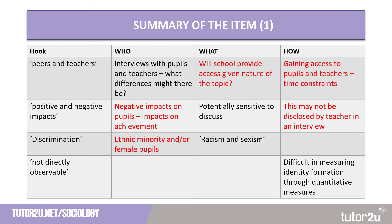For the discrimination hook, we may want to focus on characteristics of ethnic minority or female pupils, and consider status differences with a researcher. For instance, would a female pupil want to discuss sexism with a male researcher? Linking this to the how — the unstructured interview — the researcher is able to show empathy, develop a rapport and show empathy with the pupil because they've suffered something that has had a negative impact on them. Again, we've linked the who, the what and the how.